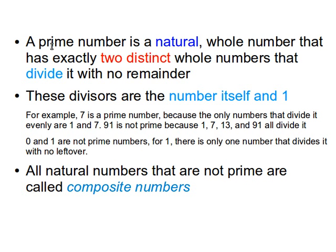A prime number is a natural whole number that has exactly two distinct whole numbers that divide it with no remainder. A natural number means it's not negative, so it's not minus one, minus two, and so on. It's not a fraction — not one over three, one over two, one over five, or five over thirteen. And it does not have a decimal point, so it's not one point three, one point four, or fifty point six. Natural means it's a positive number, not a fraction, and not a decimal.